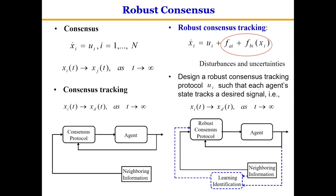For the consensus problem, the states of the agents agree on a constant value. For a more general consensus tracking problem, the states of the agents agree on a time-variant given signal xd. Considering disturbances and model uncertainties, a robust consensus tracking problem can be formulated where fai represents the disturbance and fbi represents the model uncertainty. The control goal is to design a robust consensus tracking protocol ui such that each agent's state xi tracks a desired signal xd.